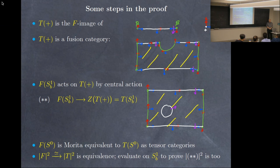In the case of chiral central charge zero, can you get rid of the frame? Just do everything with the frame?